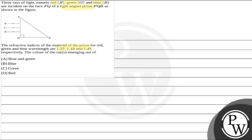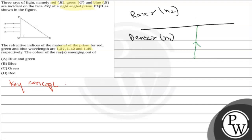Now firstly, we will see the key concept. Let's say this is an interface of rarer and denser medium, where this is the rarer medium with refractive index n2 and this is the denser medium with refractive index n1. Now an incident light comes on this interface. The surrounding medium is rarer, so this incident ray will bend away from the normal when it moves from denser to rarer medium. So here is a refraction ray.